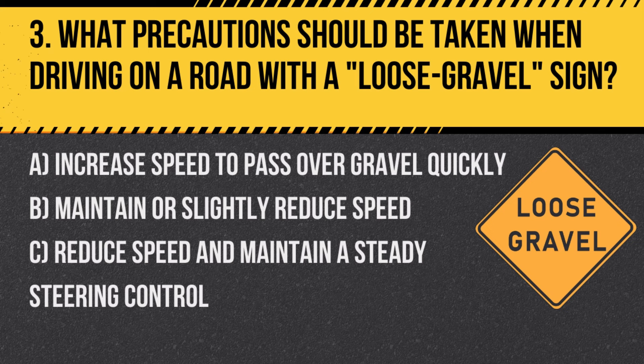Question 3: What precautions should be taken when driving on a road with a loose gravel sign? A. Increase speed to pass over gravel quickly. B. Maintain or slightly reduce speed. C. Reduce speed and maintain a steady steering control. Answer: C. Reduce speed and maintain a steady steering control. Loose gravel can cause a vehicle to skid, especially at high speeds.